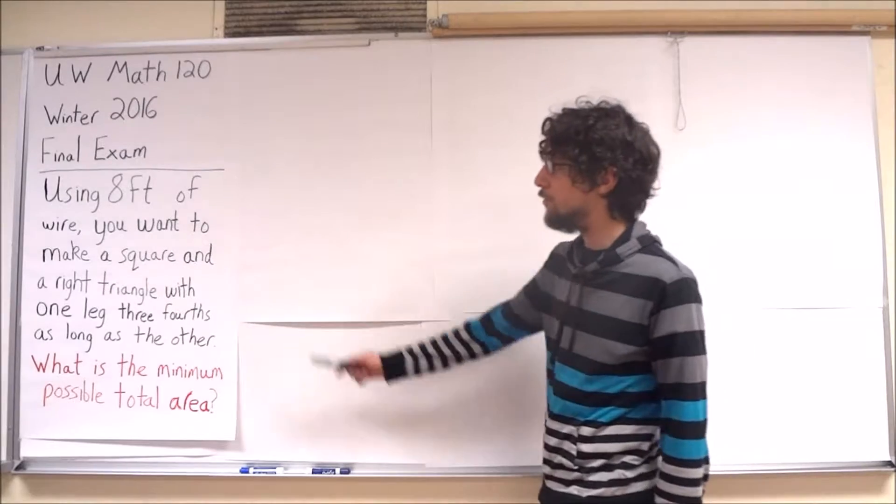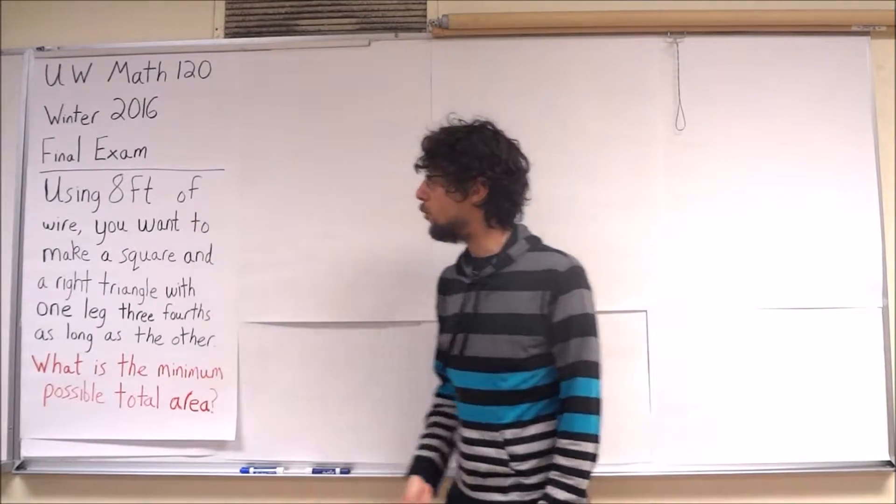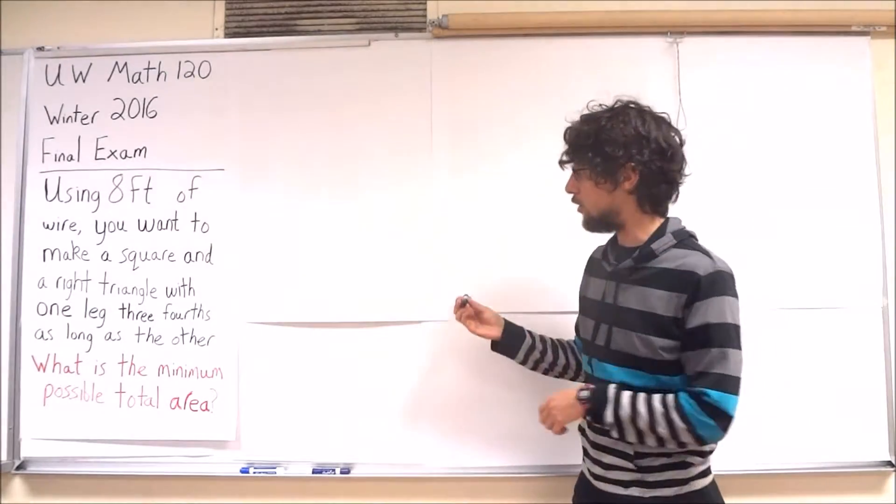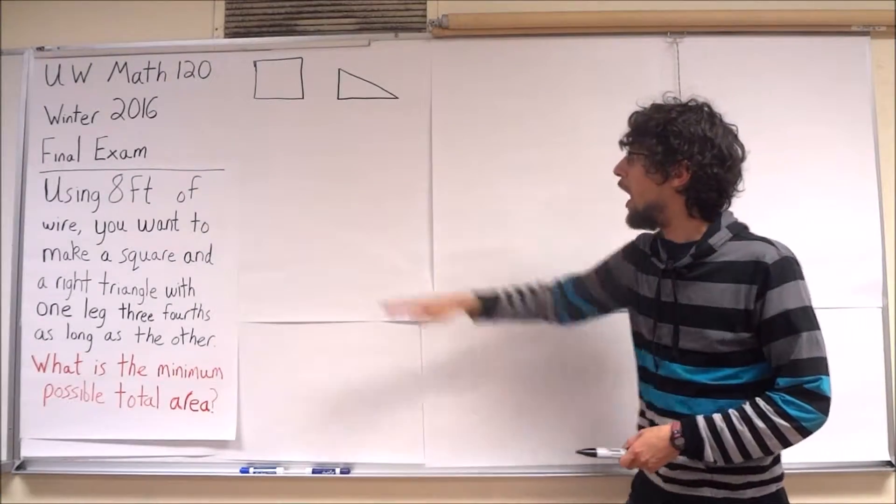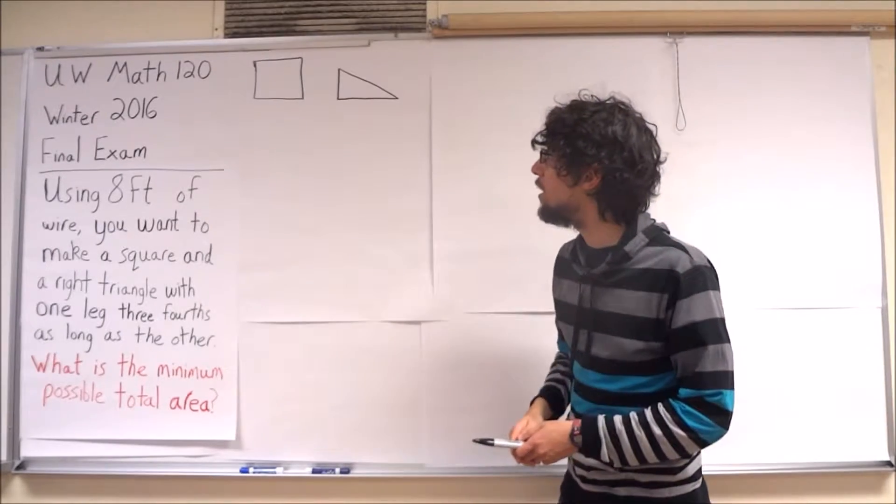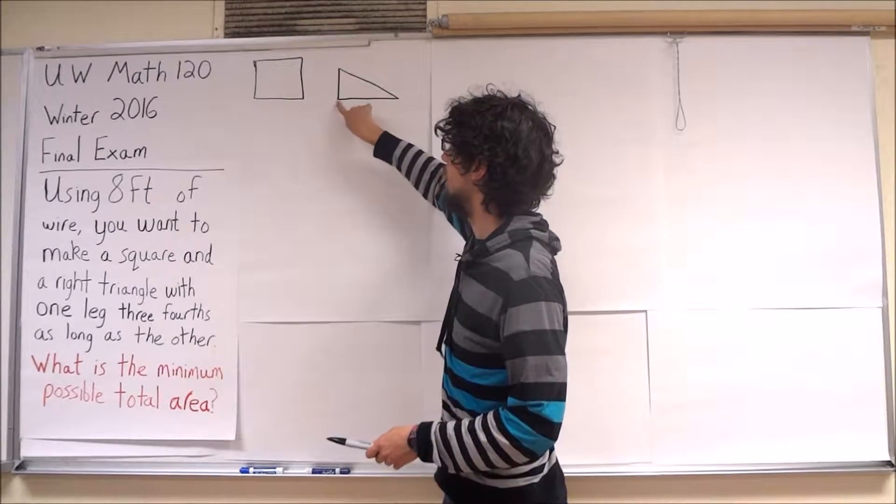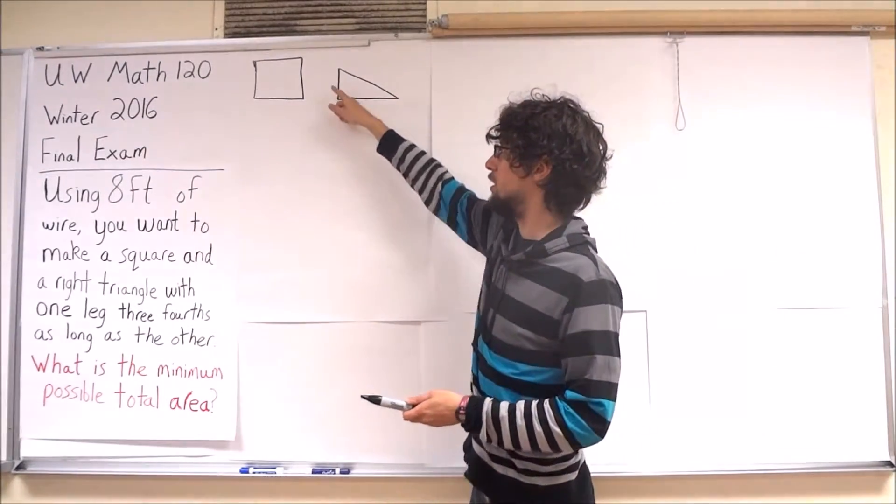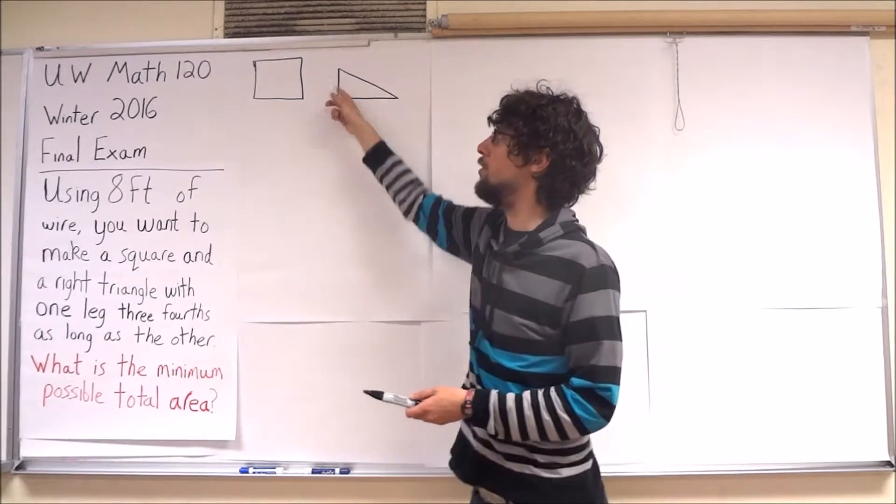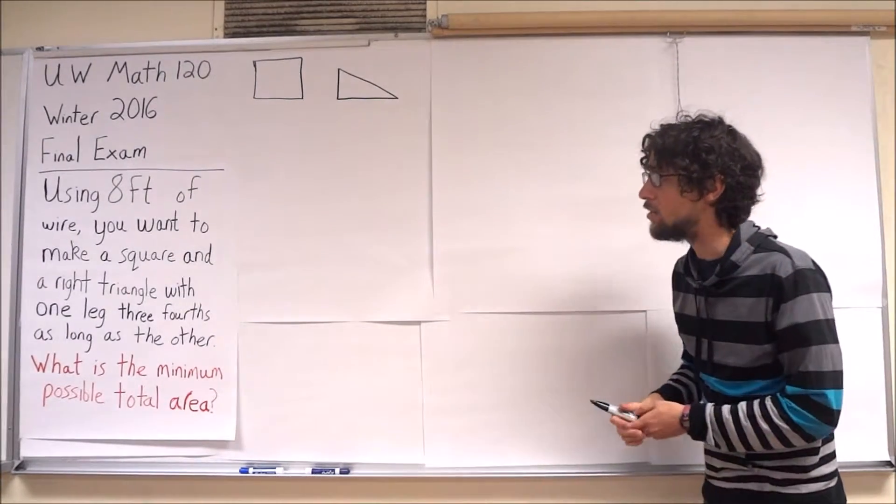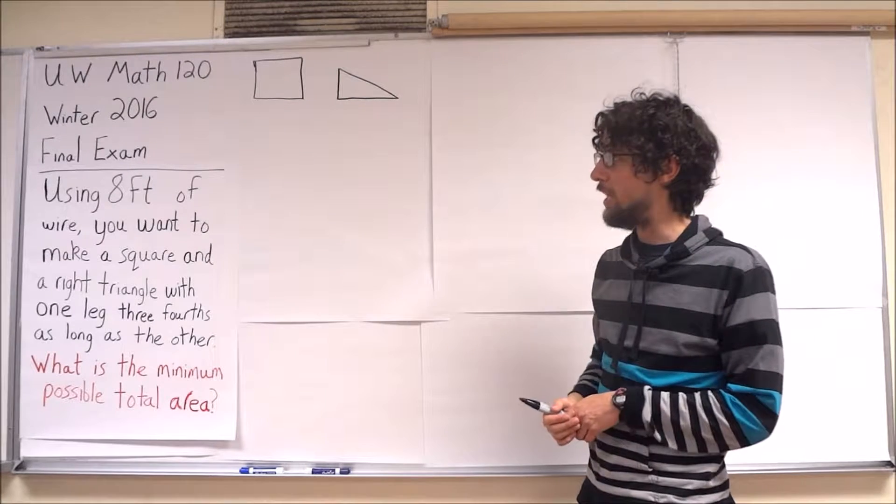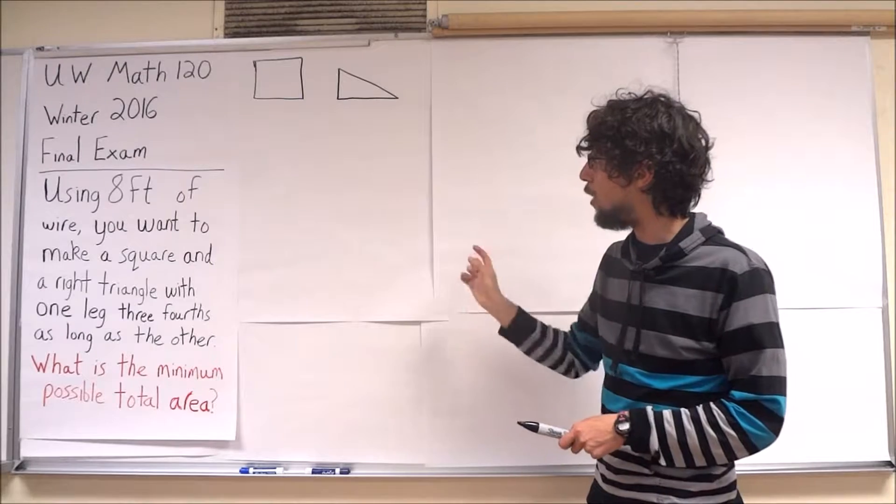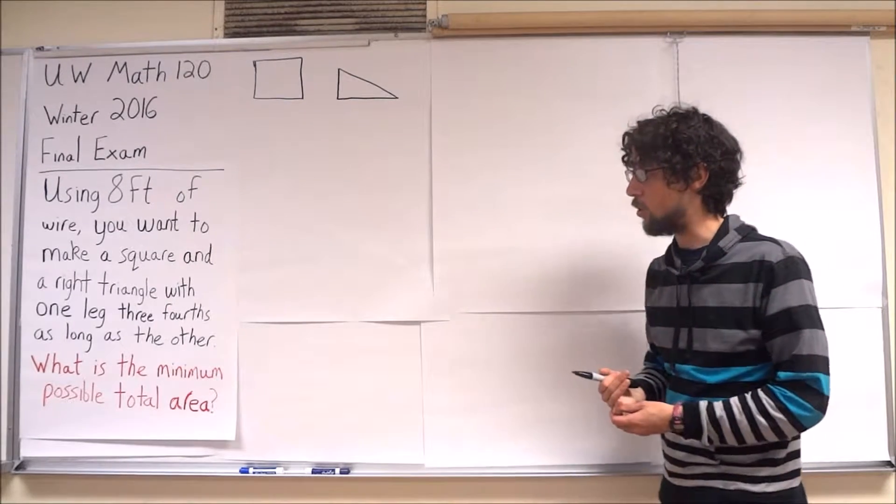We're asked to consider 8 feet of wire, and with this 8 feet of wire, we're going to make a square and a right triangle. With this triangle, we know that one side length is going to be 3/4 the length of the other side. In particular, we know that this right triangle is going to be similar to a 3-4-5 right triangle. And we're going to use all 8 feet of wire. We want to know how to construct these shapes in order to minimize the total area.